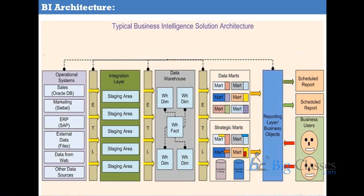Whatever work we do with the ETL tool — suppose I define 100 source tables, 50 target tables, and write 150 mapping or ETL programs — the information about source data objects, target data objects, and complete mapping programs is kept in a separate location called metadata. Using the metadata, we can find out what the sources are, what objects are in the source, what the targets are, how many programs are written, what each program is doing, what transformations are done — all these details come from the metadata. You can browse the metadata to get whatever details you require.